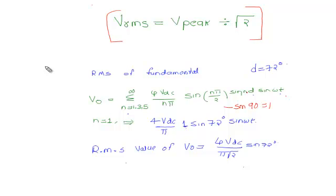Substituting sin(nδ) with n = 1, and using the value of δ = 72 degrees calculated from the previous question, we get sin(72°) × sin(ωt). This gives us the expression for the output voltage waveform.